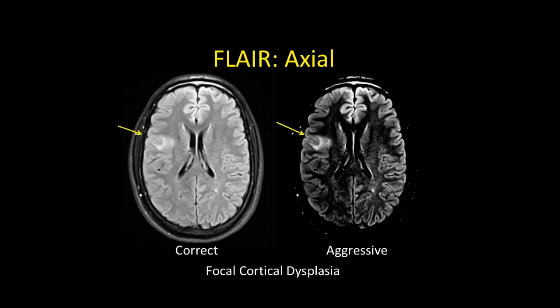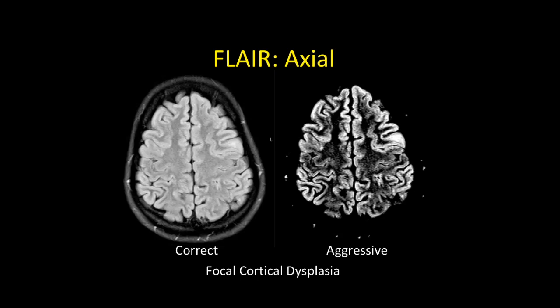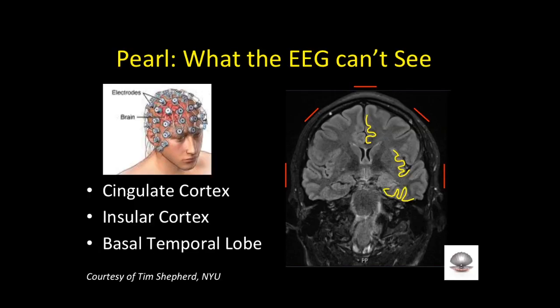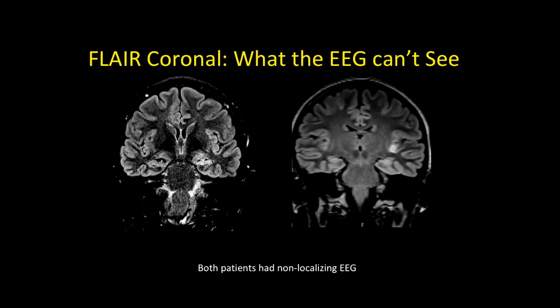Here's a cortical dysplasia you can't miss on FLAIR; here's another you might miss at correct windowing but which stands out when windowed aggressively. A key pearl: look where the EEG can't see. Surface electrodes can't reach deep structures — specifically the interhemispheric fissure involving the cingulate cortex, the insular cortex covered by the operculum, and the basal temporal lobes. Two cases with non-localizing EEG: one had a cingulate dysplasia, the other had an insular dysplasia. Always look where the EEG can't.